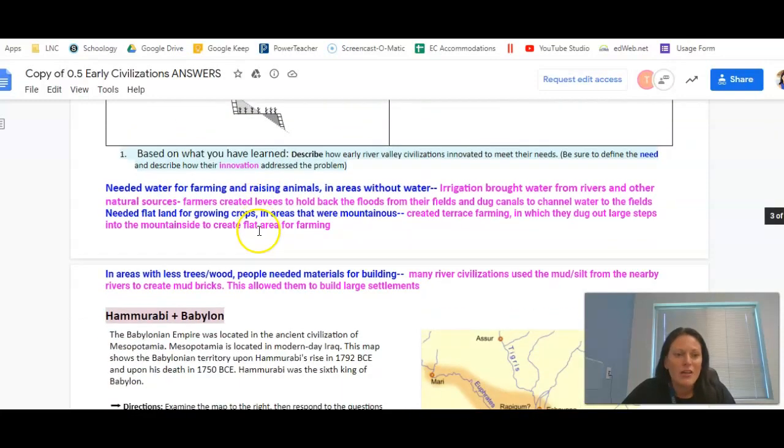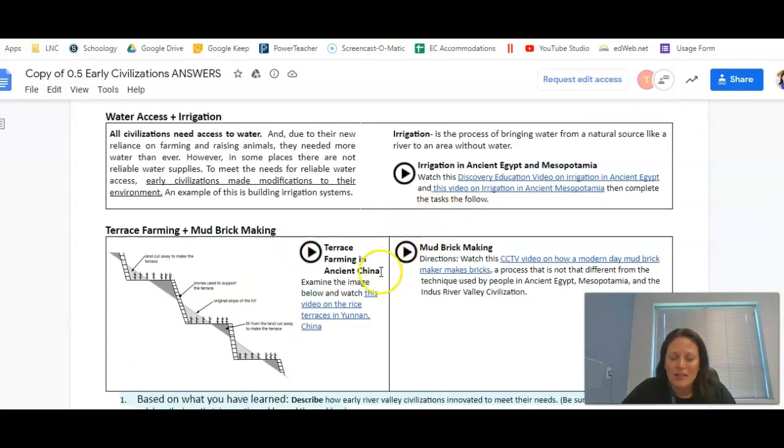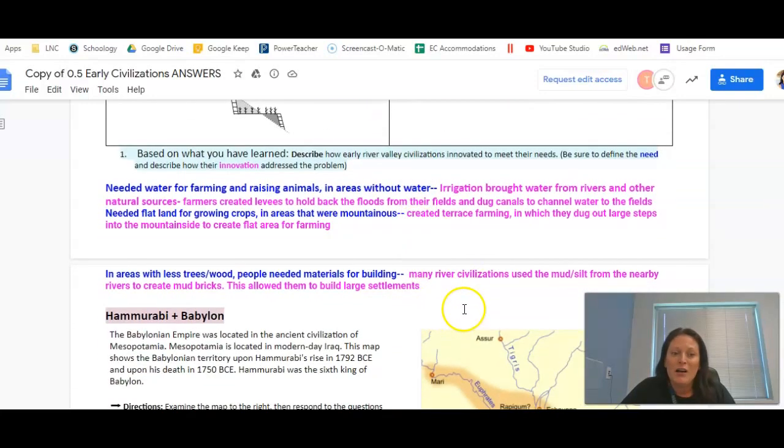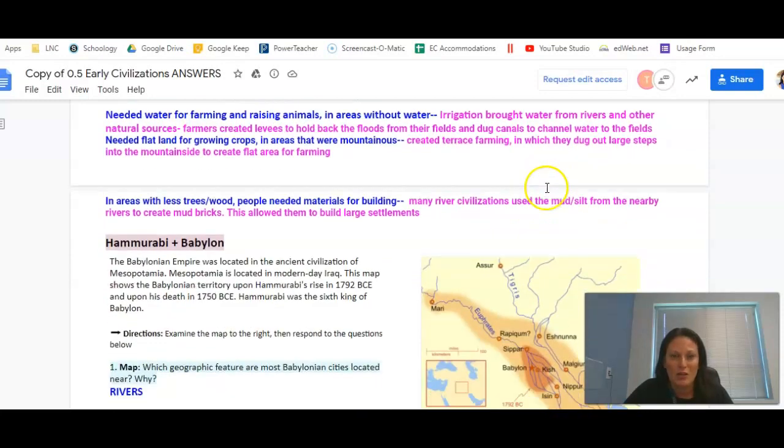The last way that we interacted and met a need for ourselves was in mud brick making. In areas with less wood or trees, people needed materials for building, so many civilizations used the mud or the silt from the nearby rivers because these are all river valley civilizations, and that allowed them to build large settlements. So that sums up the three videos.